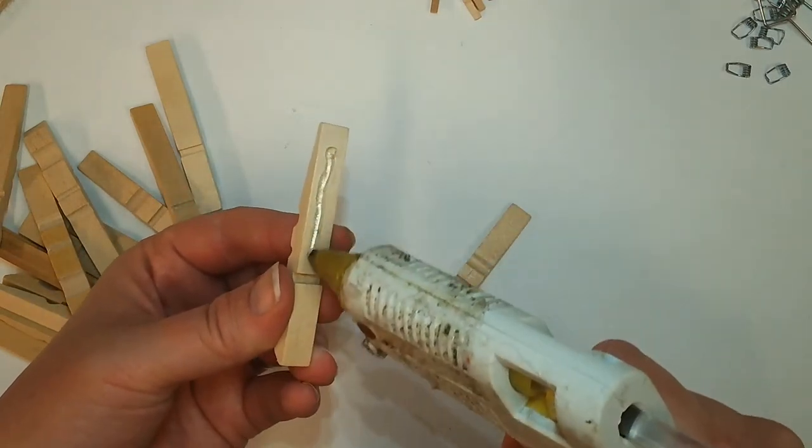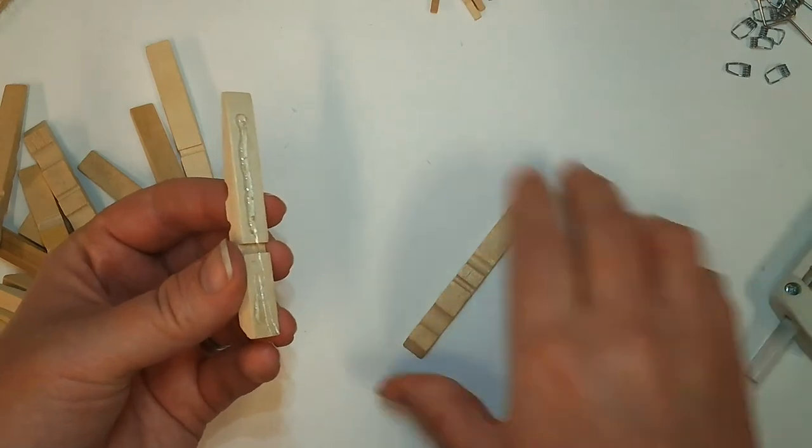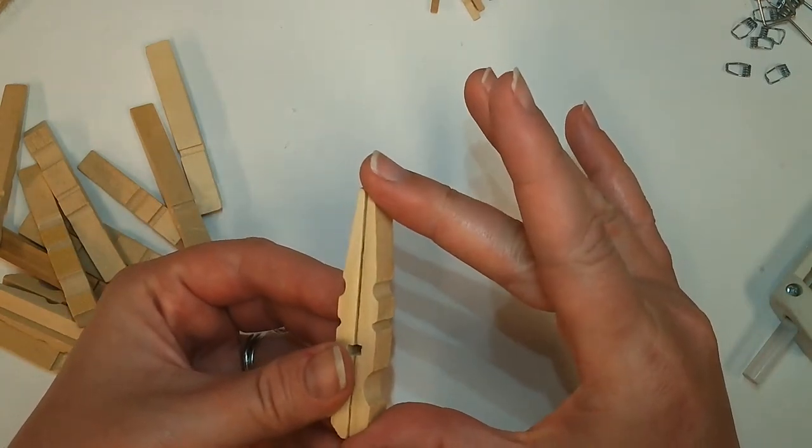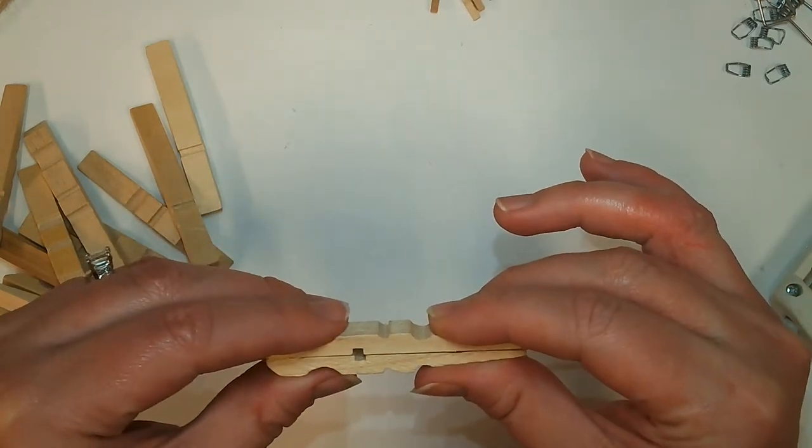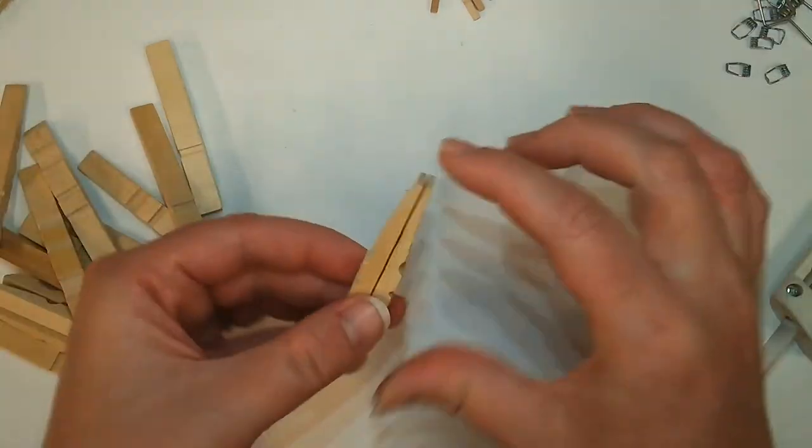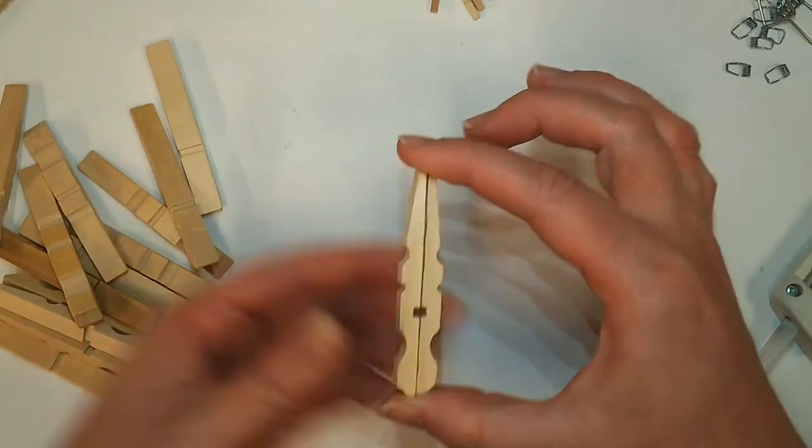Go ahead and with a little bit of glue, glue that first one in place, and you'll go ahead and do that with all of them. You'll end up with eight spikes that'll look like this.